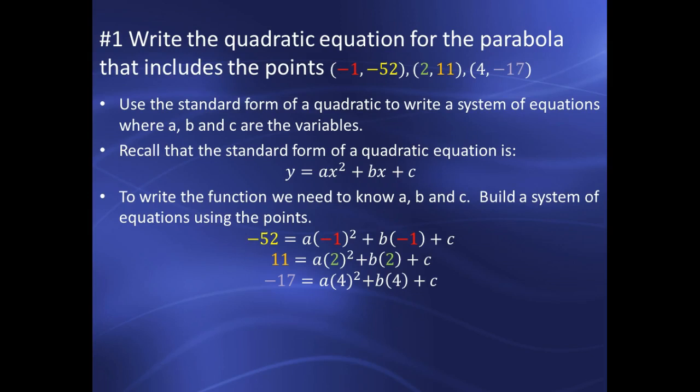So I'm going to use those to build a system of three equations with three variables. You see in this first equation here that I substitute in the y value negative 52 for y and I substitute in the x value of negative 1 for x. And later on I'm going to calculate what all those things are but you can see that I've done that for all three points.